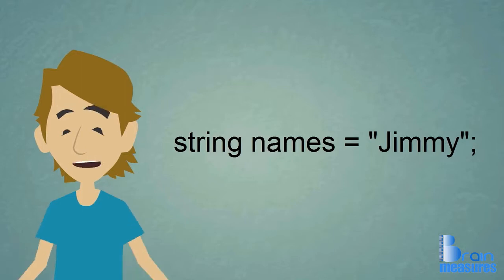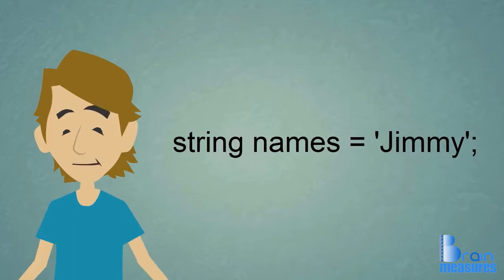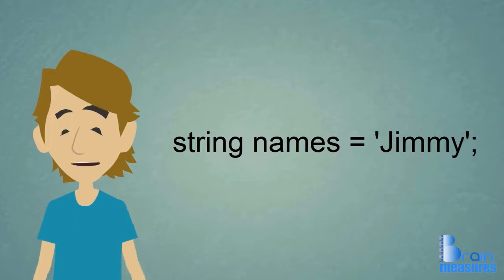So now if we were to print the variable names to the screen, it would read Jimmy. In some other programming languages, apostrophes are used instead of quotes. But the idea is the same. You can't set a variable without some kind of quotes around it.